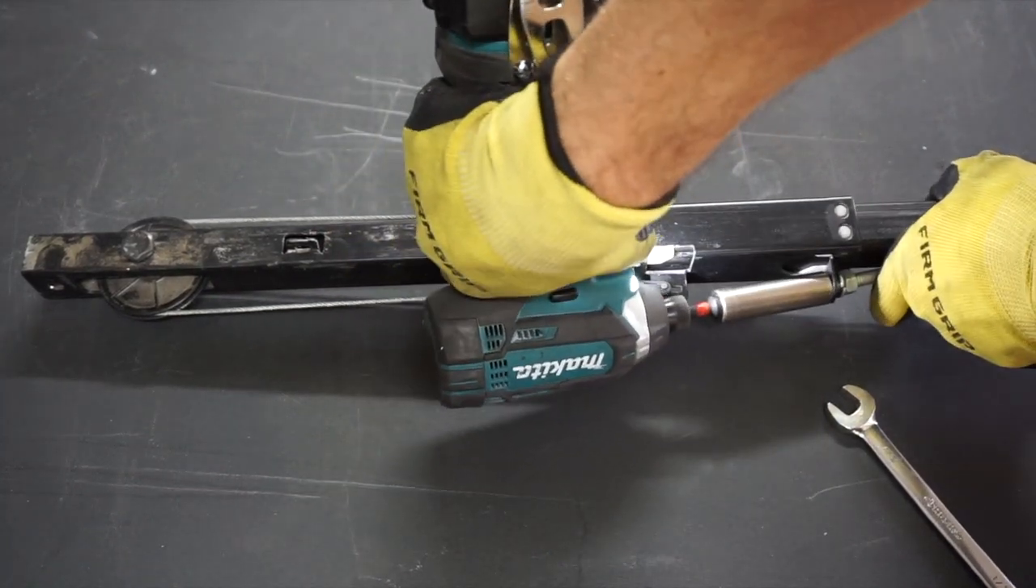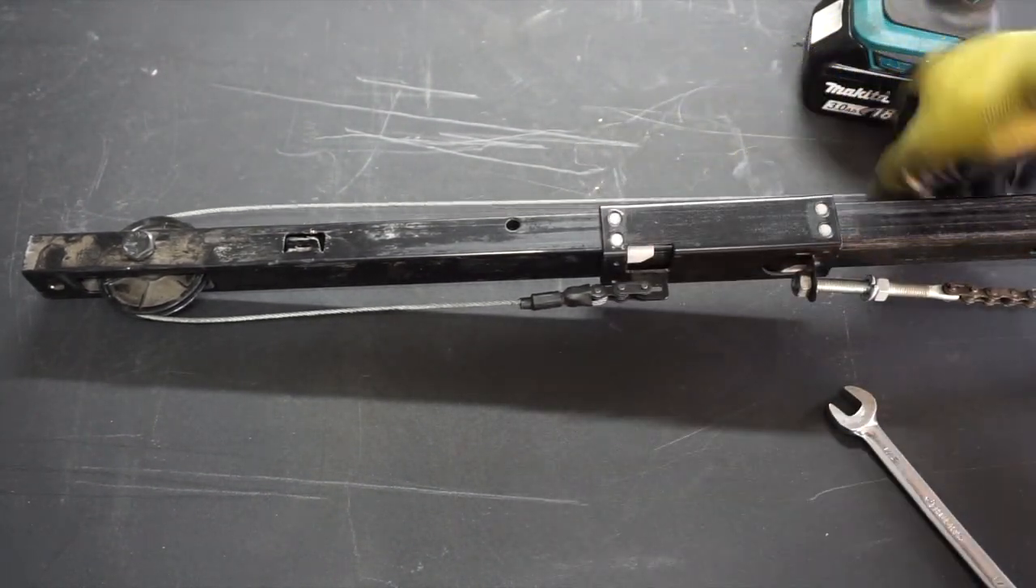First step is you do have to loosen the tension here. The way you do that is you get either a half inch socket on an impact gun like I do, or you could do a wrench if your socket doesn't reach into here. Now you can see this is all very loose, so much so that I can even just pick up that cable here and remove it from the pulley. So now the cable is free and so is the pulley.